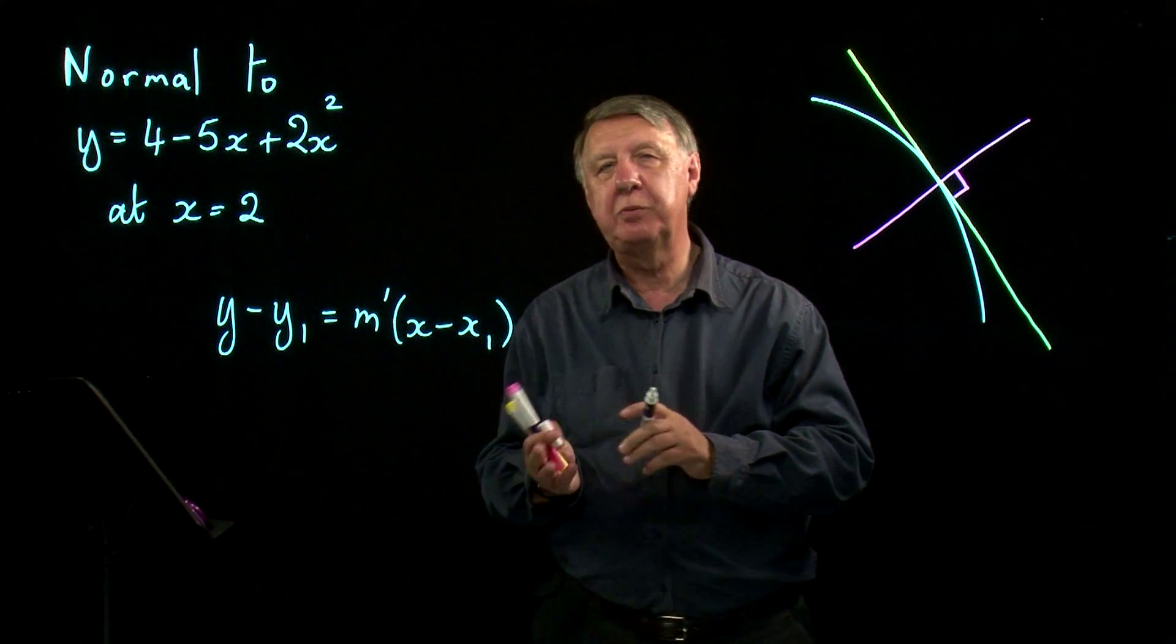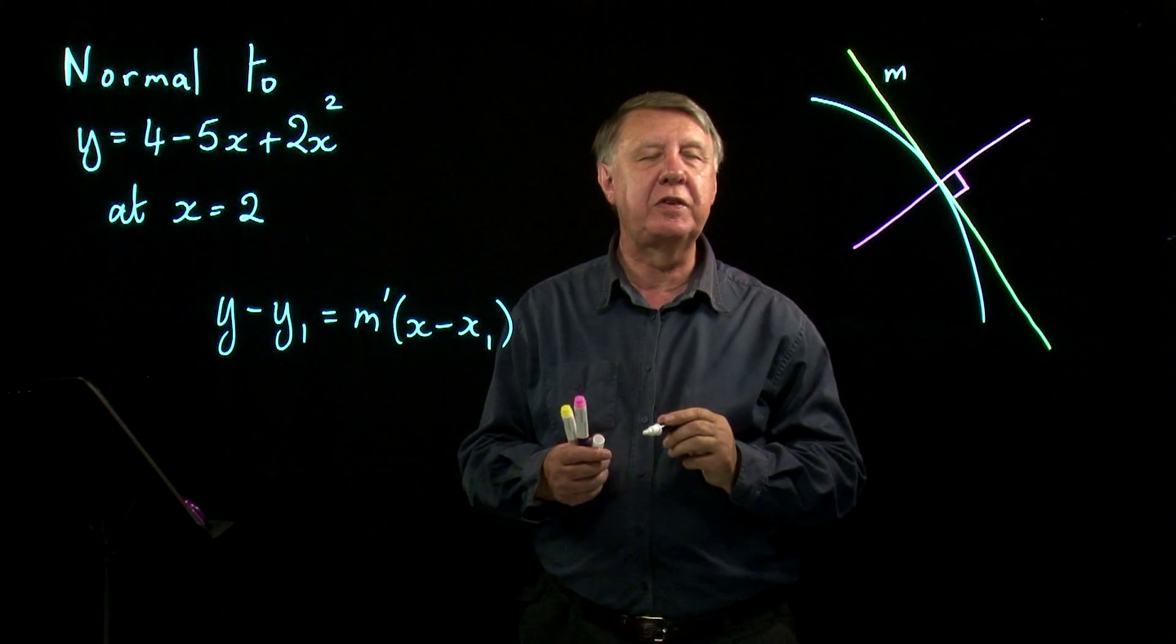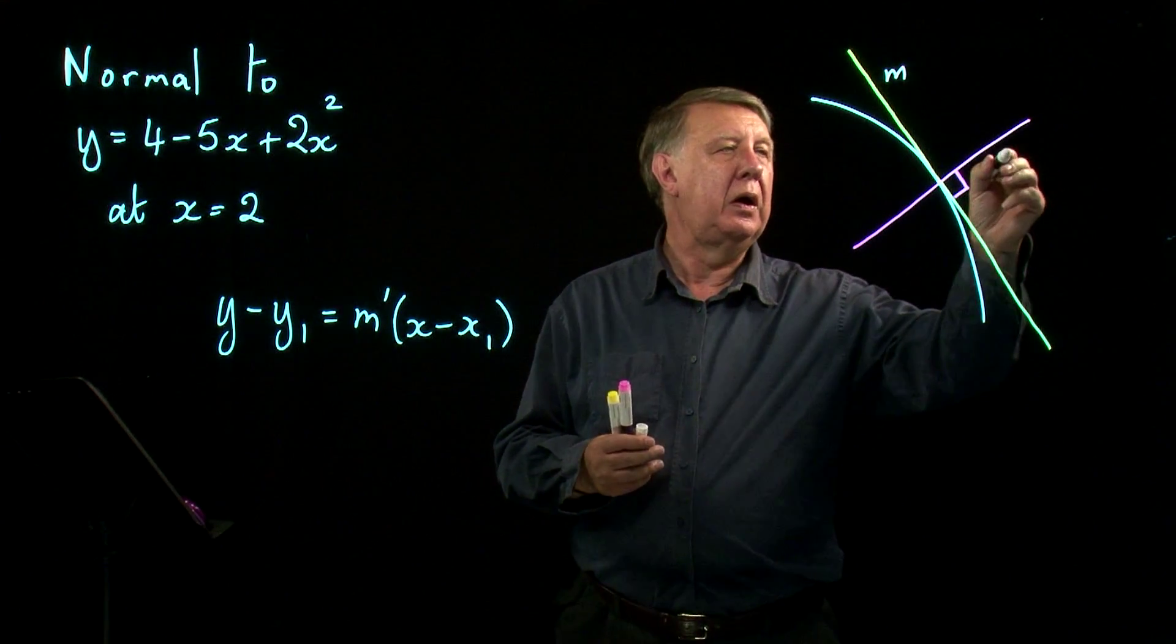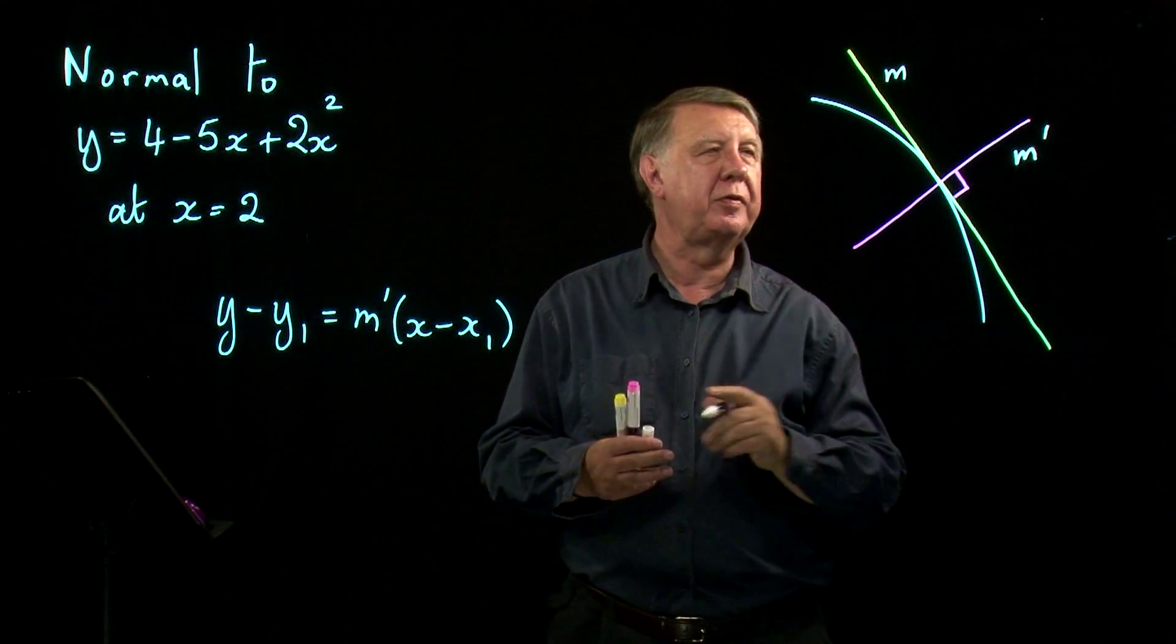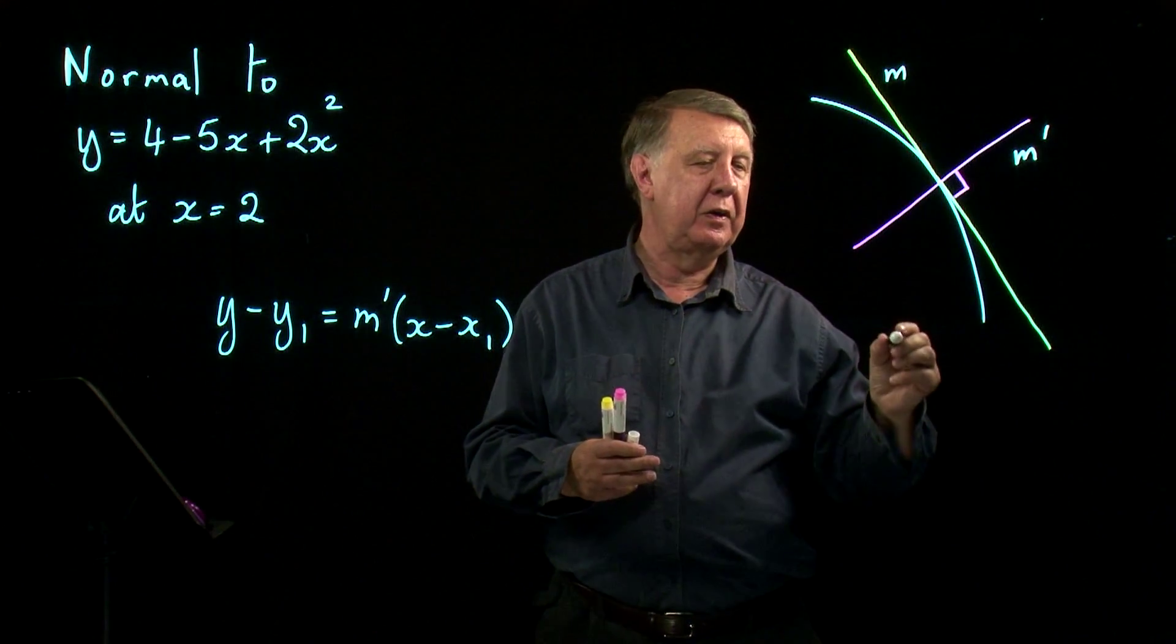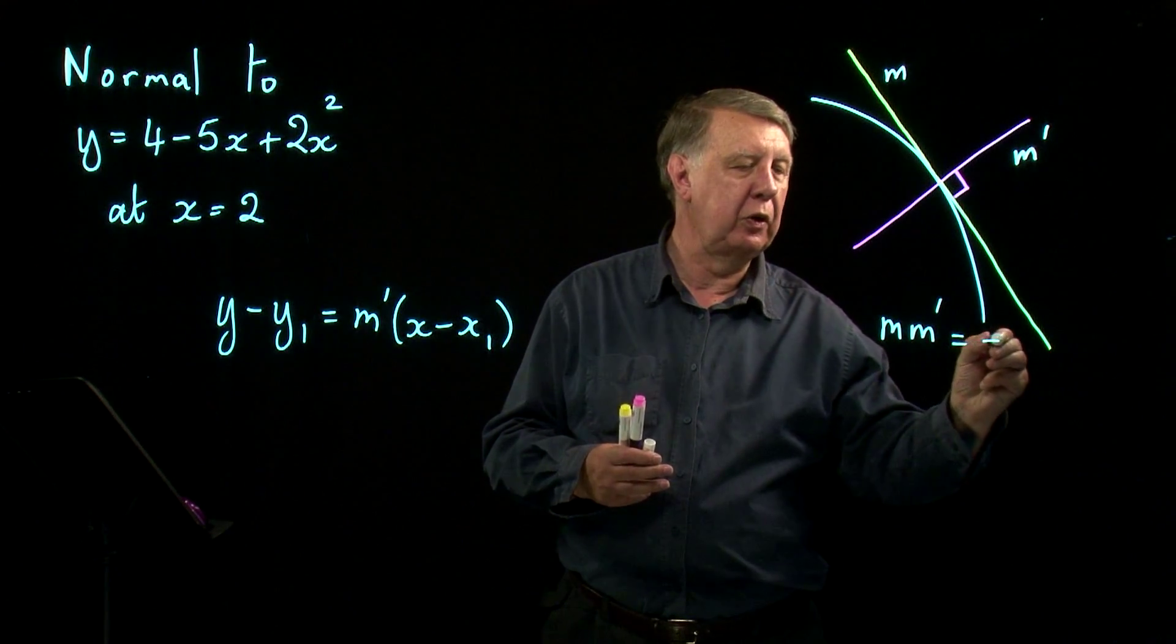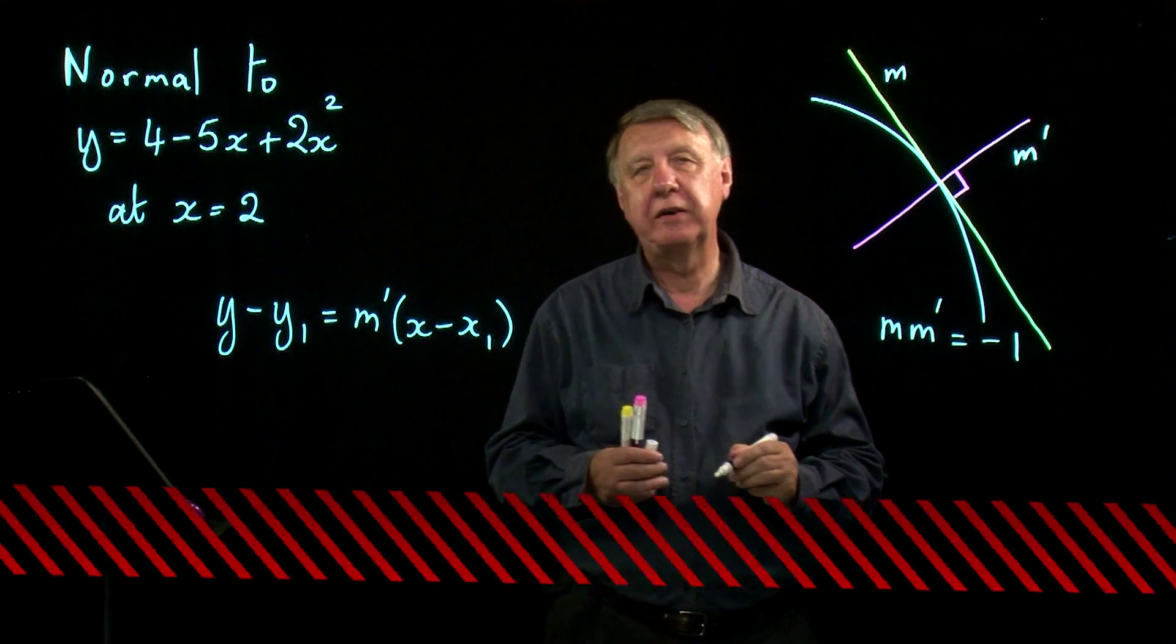Because hopefully you'll remember the work we did on perpendicular lines. So if my gradient of the tangent is m, I used m dashed for the gradient of the normal. And remember we have this important result that m times m dashed was always equal to negative 1.